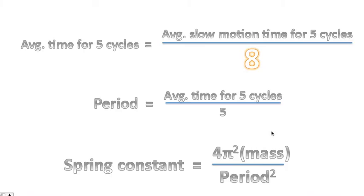And finally, here are some equations that will assist you with getting the spring constant. Notice the 8. To convert the slow motion time into just regular time, you have to divide by 8. Because the video increases time by a factor of 8 when recording in slow motion.